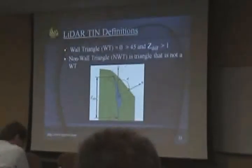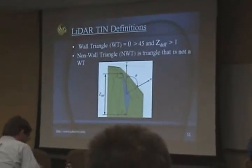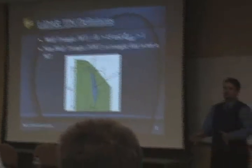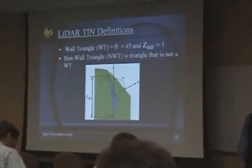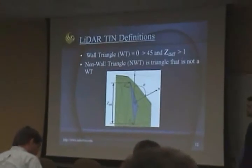Before proceeding, I need to go over some brief definitions. The first is triangle orientation — imagine the z-axis is the elevation axis of the point cloud.